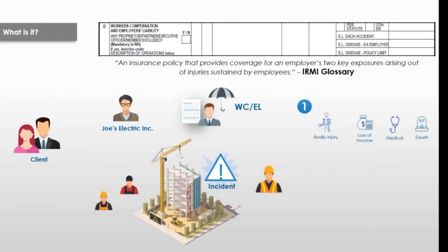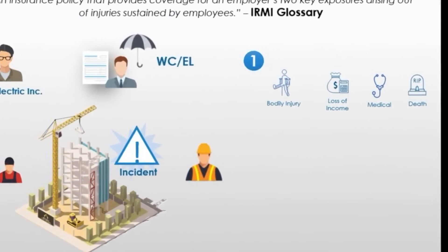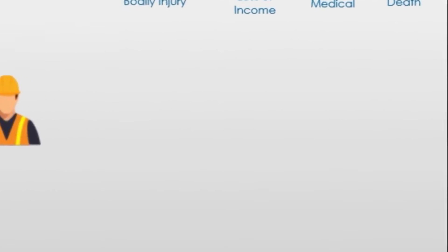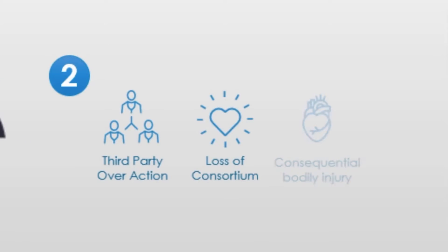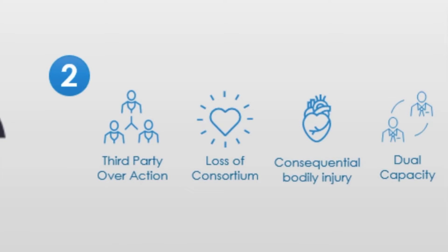Part two is the employer's liability coverage, which covers liability arising out of an employee work-related bodily injury that is not covered by workers' compensation. Employer's liability lawsuits typically involve one or more of the following claims: third party over action, consequential bodily injury, dual capacity suits, or more. Those are just a few examples.